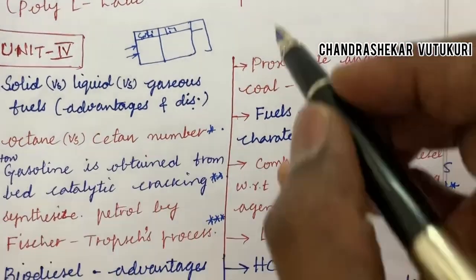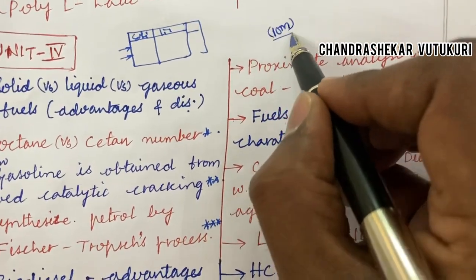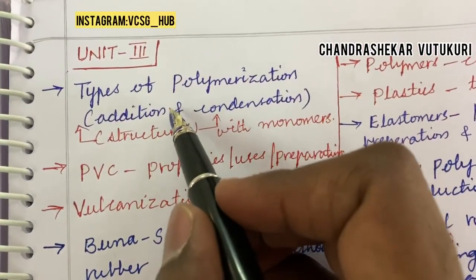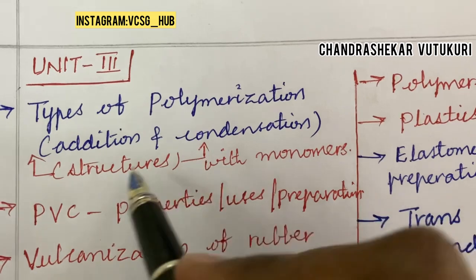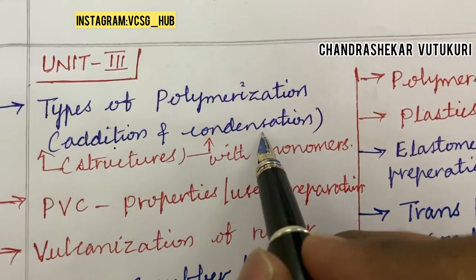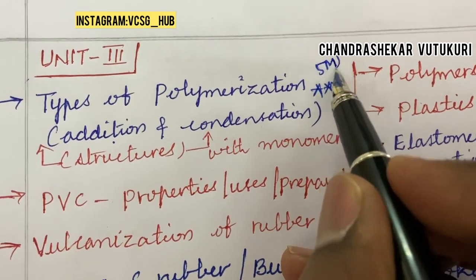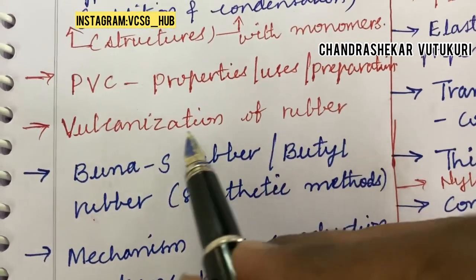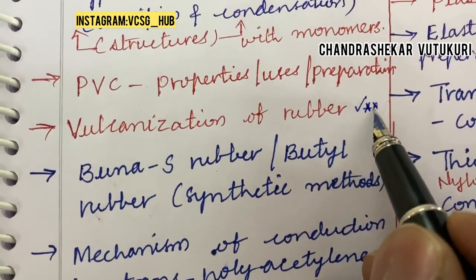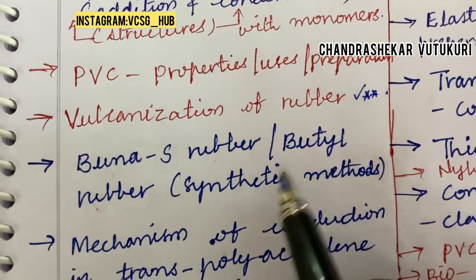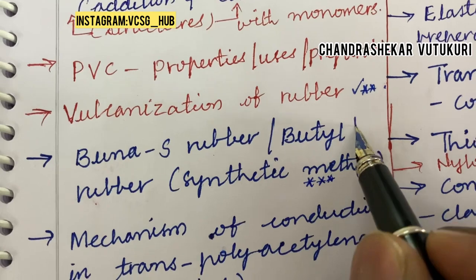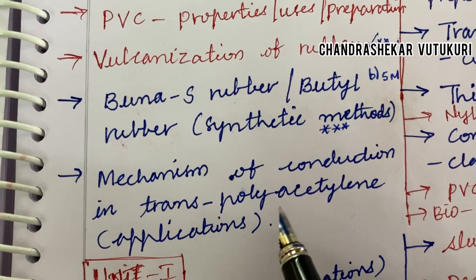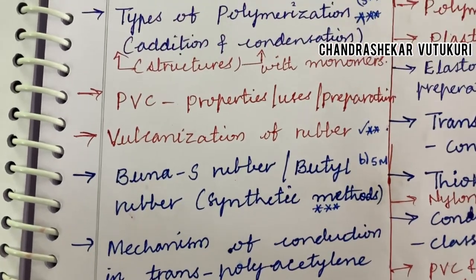The short question is for 1 mark and the long question is 10 marks, but do not expect a direct 10-mark question — it is a split of 5 and 5. Now let's jump into Unit 3 — it is all about polymerization types, addition and condensation polymerization, and the structure with monomers related to addition and condensation is a topmost 5-mark question. PVC properties, uses, and preparation, and vulcanization of rubber is also a topmost question. BUNA-S rubber and BUTA rubber synthetic methods are also topmost questions, which may occur in 4B for 5 marks. The mechanism of conduction in trans-polyacetylene and its applications is also a key question.